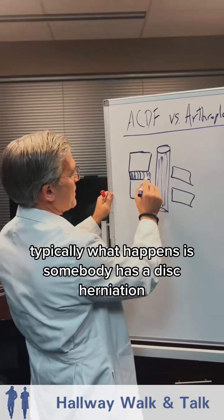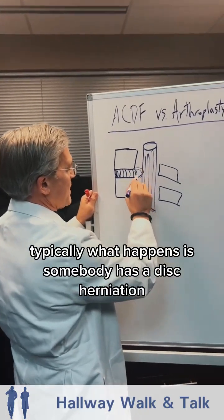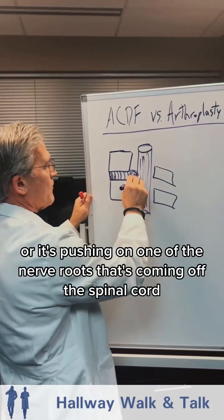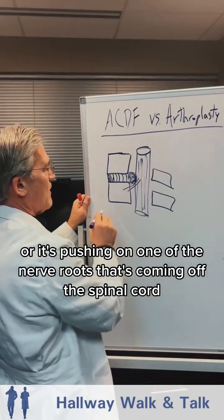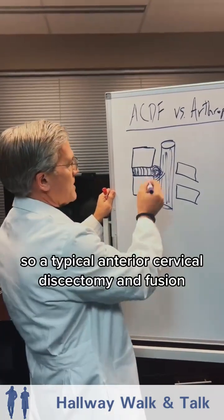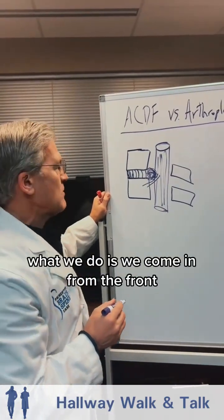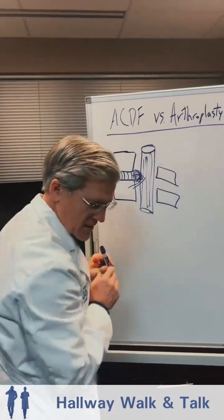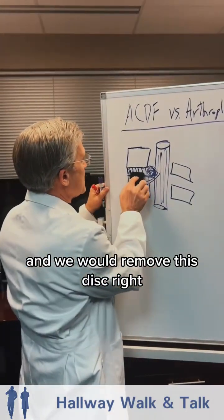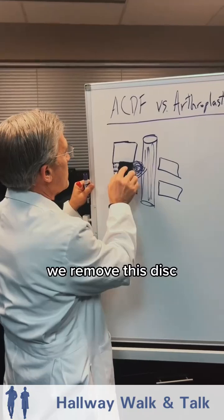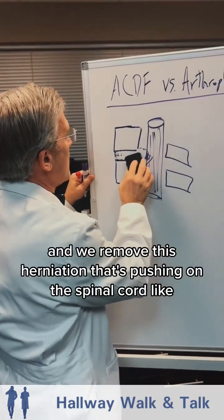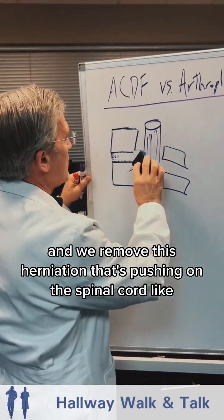In an ACDF, typically what happens is somebody has a disc herniation that's pushing in on the spinal cord, or it's pushing on one of the nerve roots coming off the spinal cord, and it's causing pain or dysfunction. In a typical anterior cervical discectomy and fusion, we come in from the front and remove this disc and the herniation that's pushing on the spinal cord.